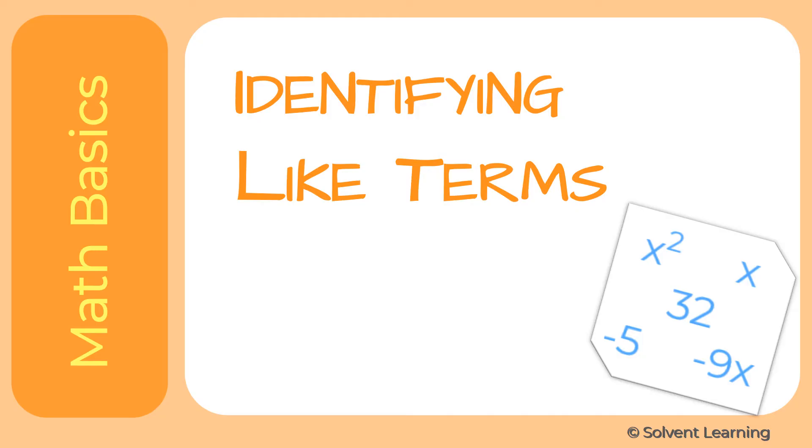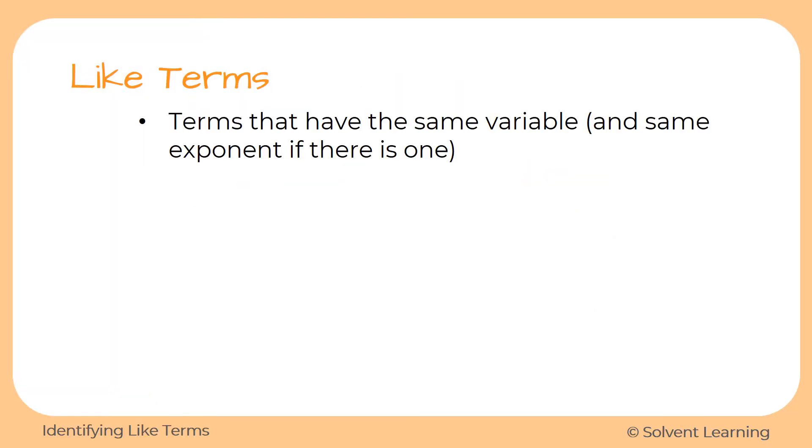But before we do that, it's important for us to be able to identify like terms. So what are like terms? They're terms that have the same variable and the same exponent with that variable, if there is an exponent at all.